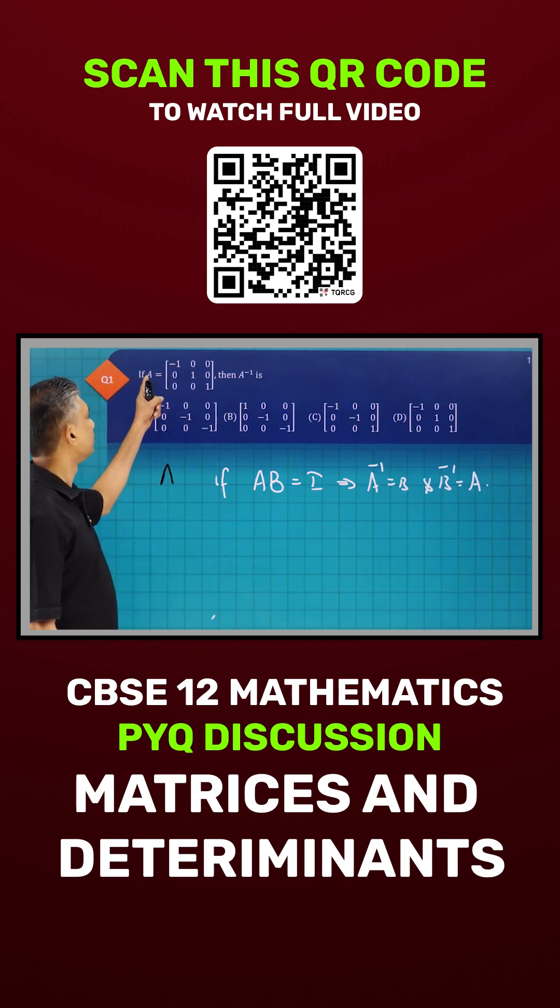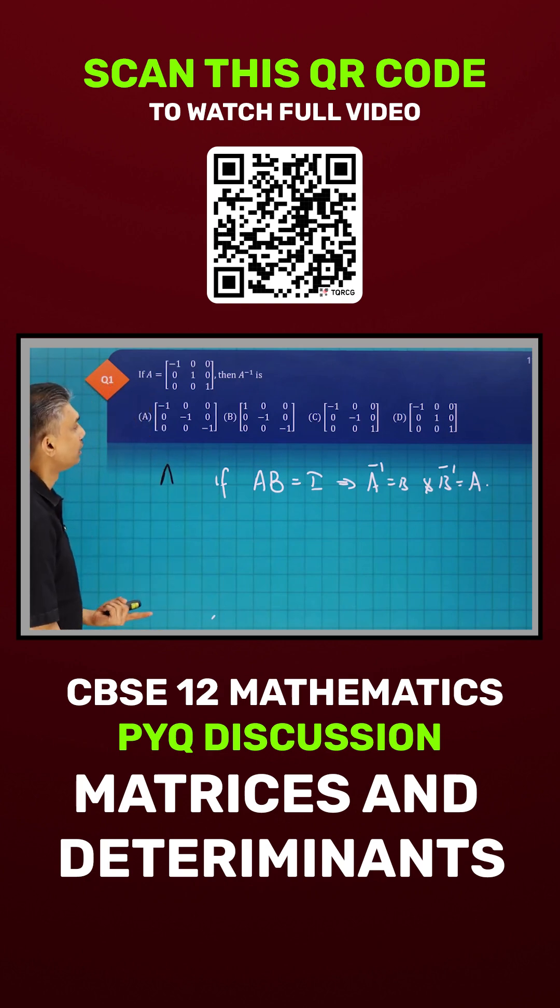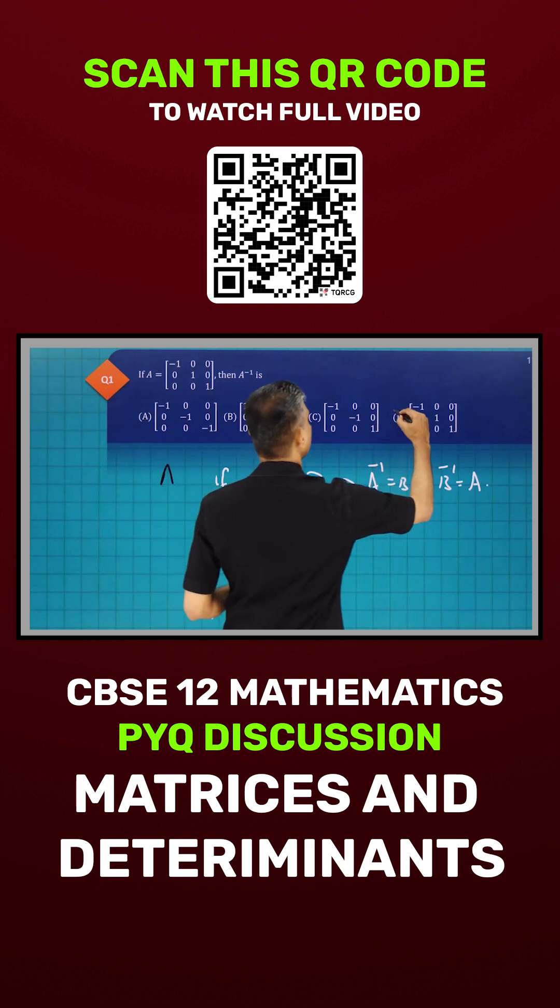Now you see here, this is A. Then what will be the inverse? If you multiply both of them you will be getting the same matrix, so it will be what? D.